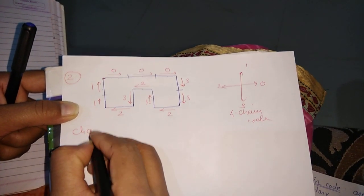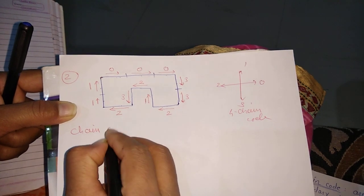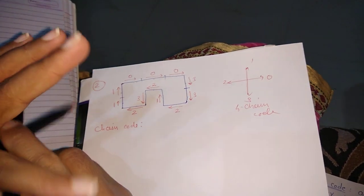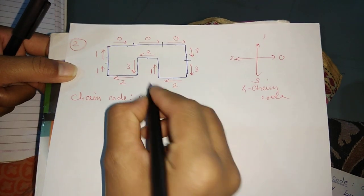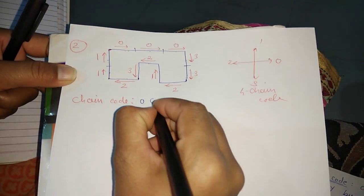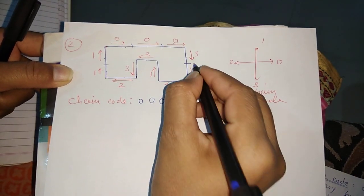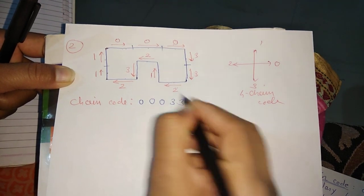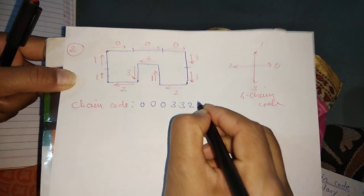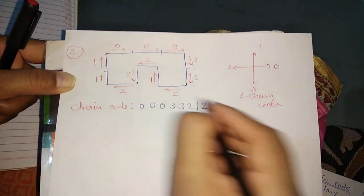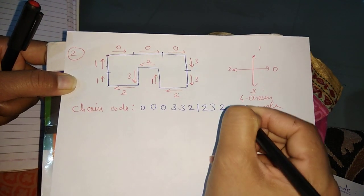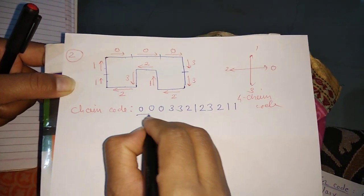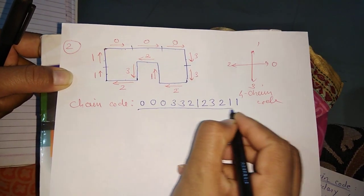So the chain code for this shape is: 0, 0, 0, 3, 3, 2, 1, 2, 3, 2, 1, 1. This is your complete chain code derived using the 4-chain code method.